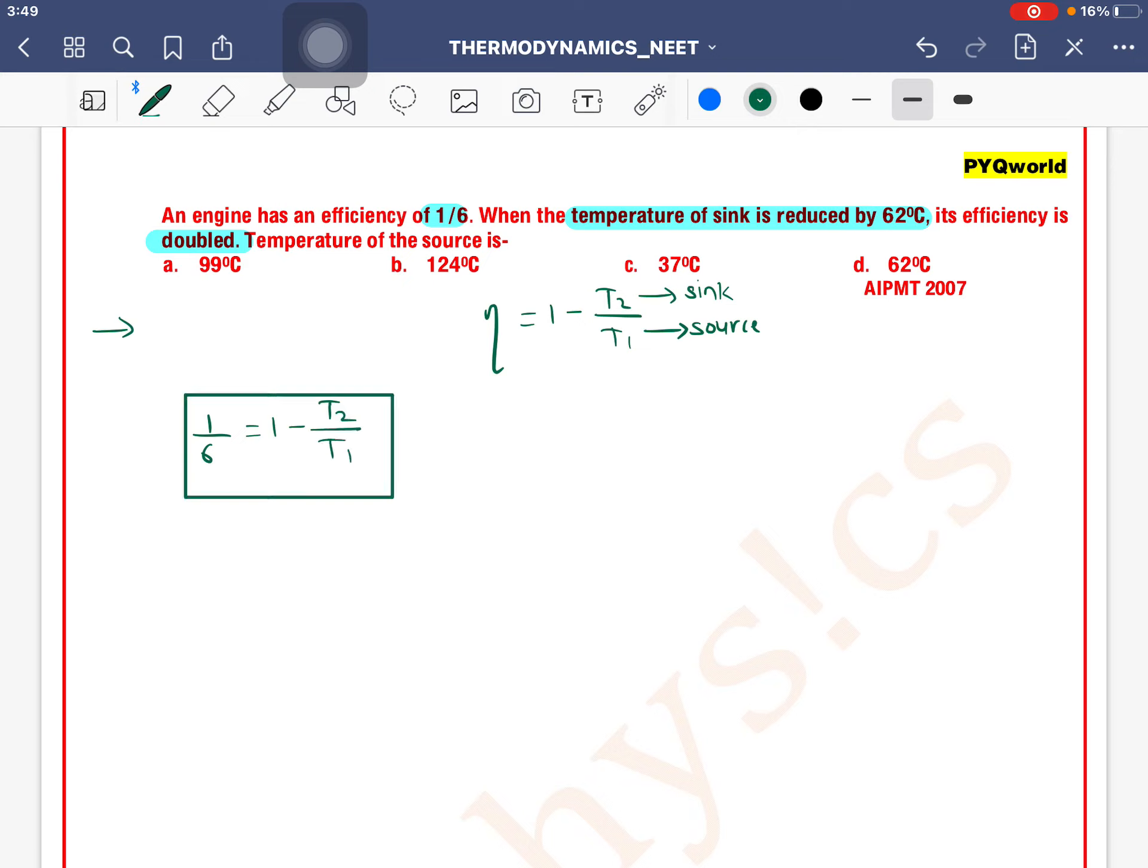Let's keep this equation for later. In the second case, its efficiency doubles, so 2 × 1/6 = 1 - (T2 - 62)/T1. The temperature of sink T2 is reduced by 62.